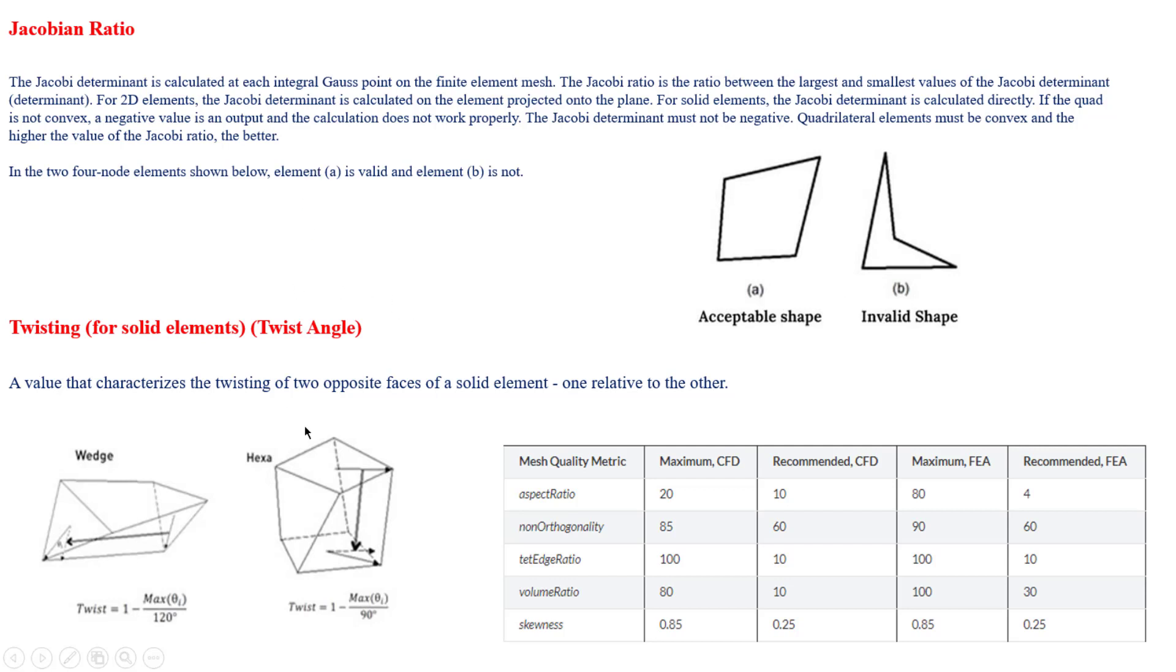These are the things we need to consider - the ratios I already showed. When it comes to twisting, this is an example of appropriate meshing we can consider. Aspect ratio recommended is 4 for FEA, and the angles, volume, and skewness recommended is 0.25.